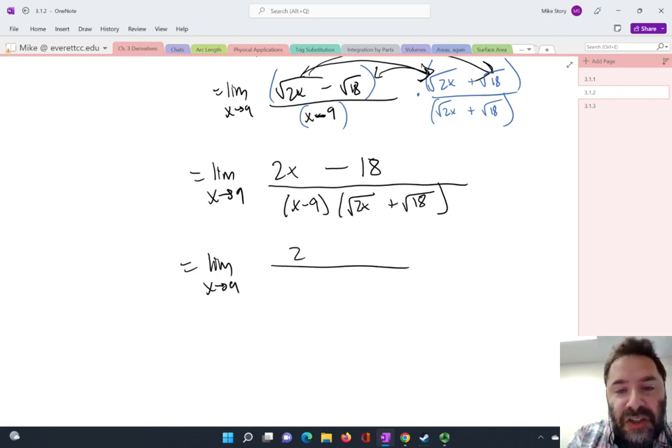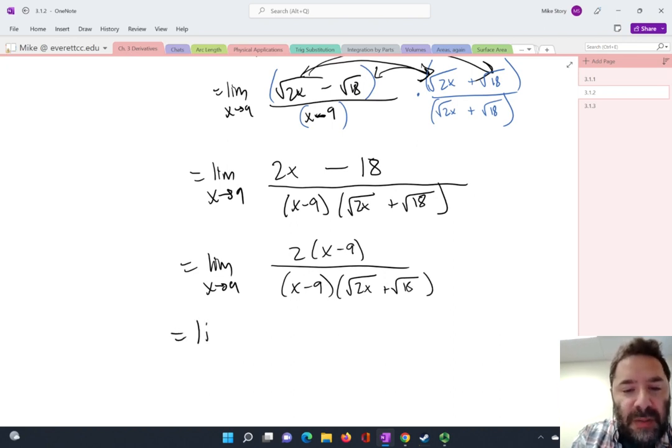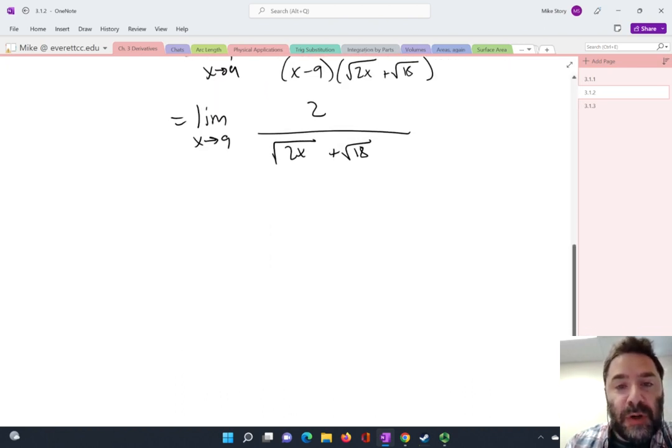Let's factor out a 2 from the numerator. Oh, check that out. Now there is a common factor of x minus 9 in both the numerator and the denominator that can be eliminated. So we're going to get a 2 over square root of 2x plus square root of 18. And I'm taking the limit as x approaches 9.